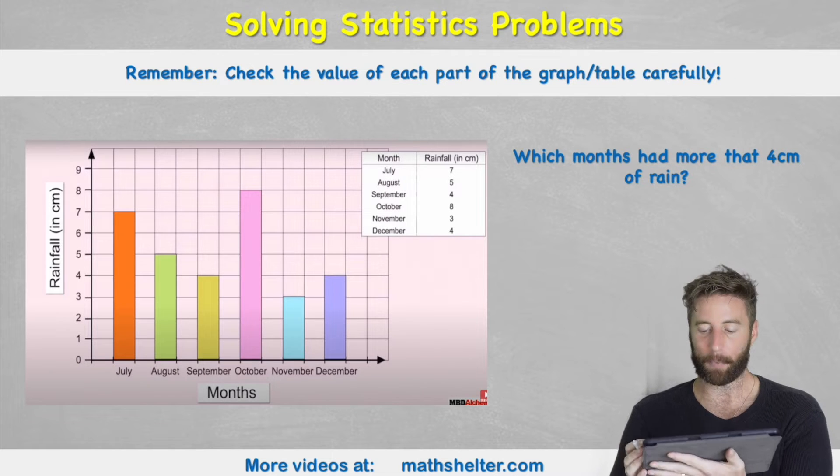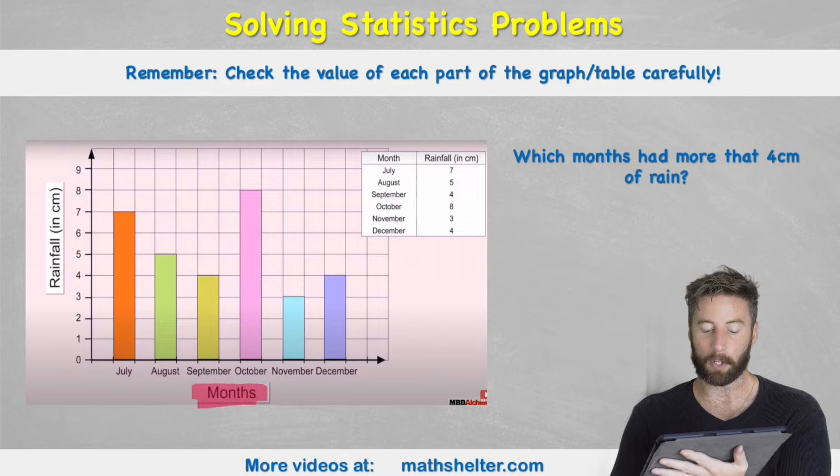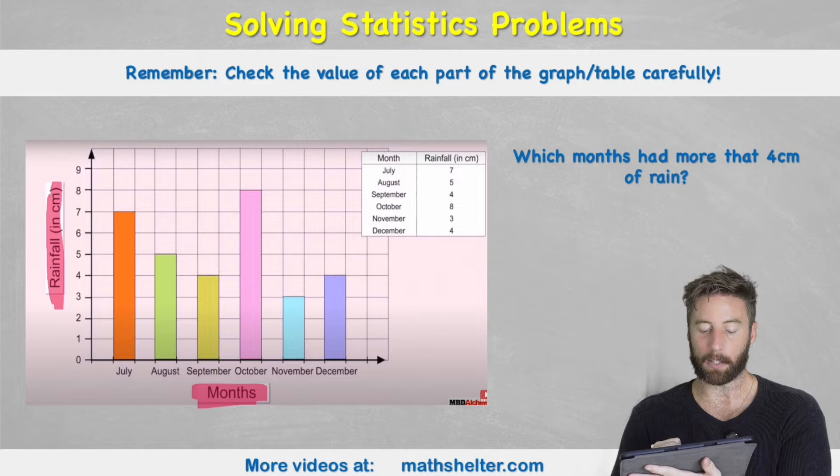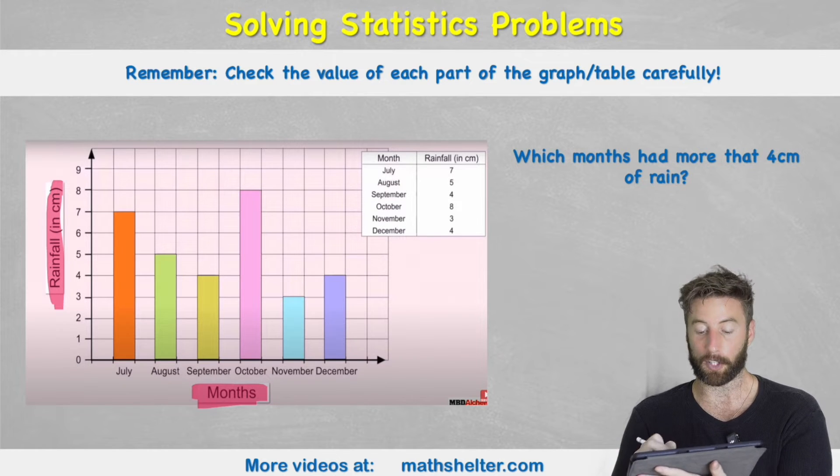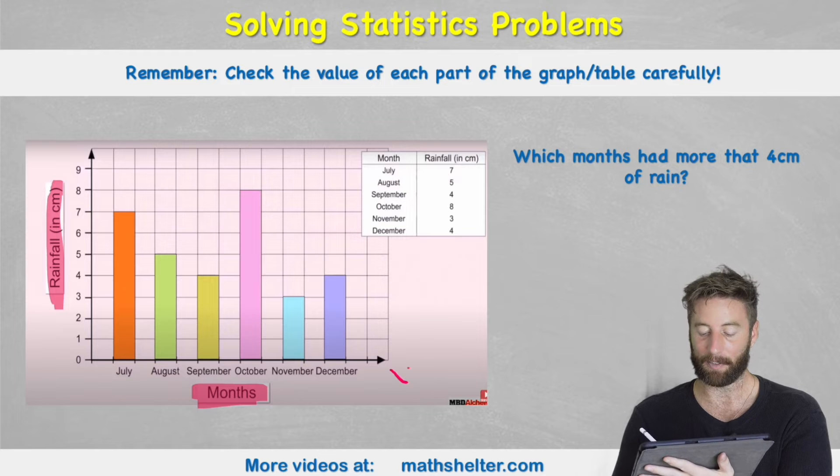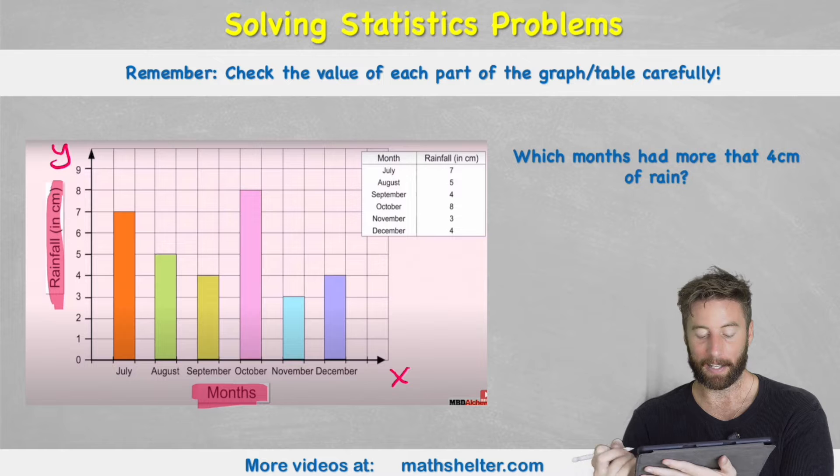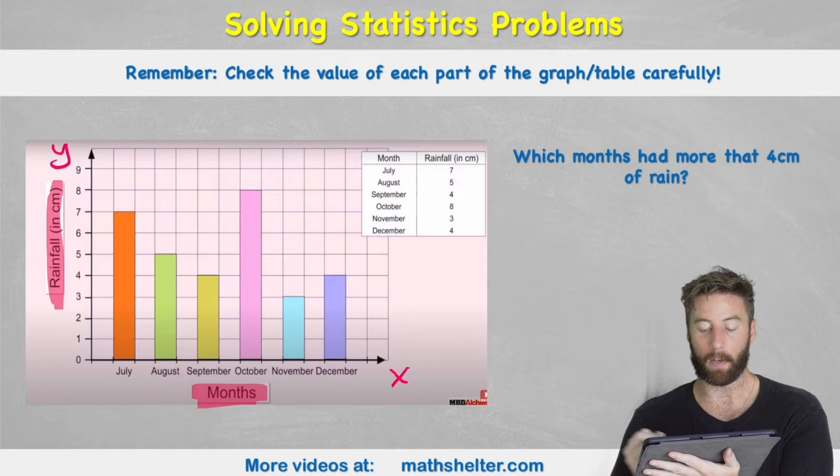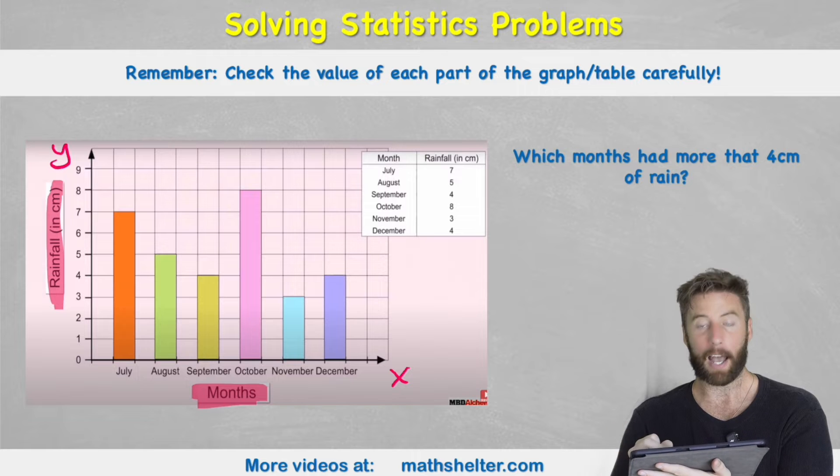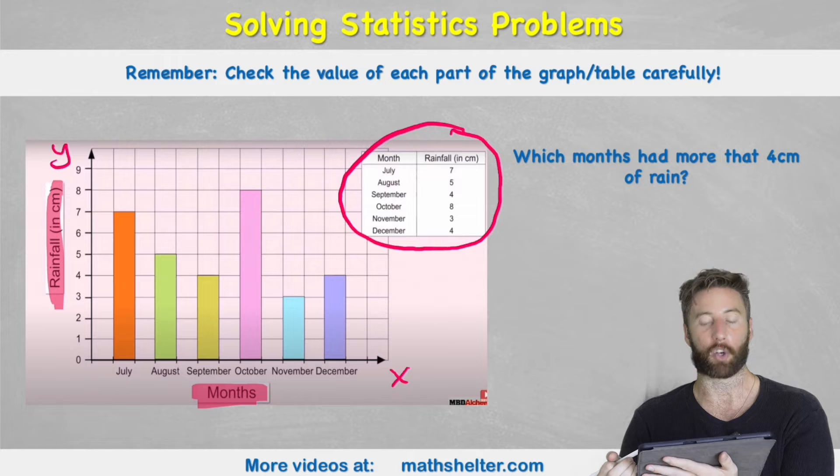So let's have a look at this first example. We can see we have a graph here with months across the bottom and rainfall in centimeters across the side, or in other words months across the x-axis and rainfall along the y-axis. We can see various months: July, August, September, October, November and December, and we also have the data shown in this little table in the corner here as well.